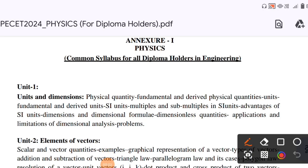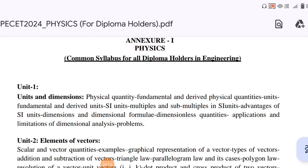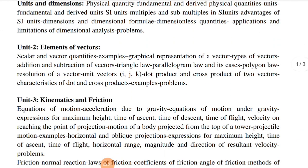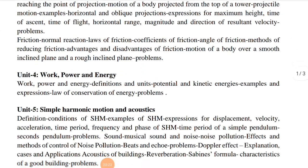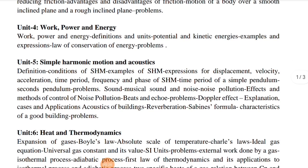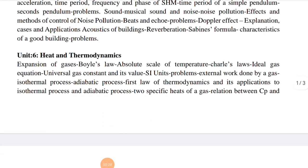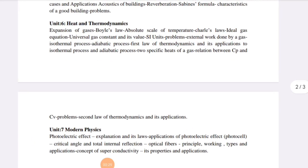Now for physics - it is also a common subject for all branches. The topics introduced in physics are next. Physics also has 25 marks. Chemistry and physics combined total 50 marks. Physics topics include: units and dimensions, elements of vectors, kinematics, friction, work power and energy, simple harmonic motion, acoustics, heat and thermodynamics, and modern physics.